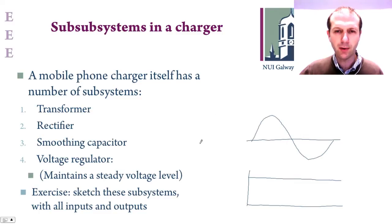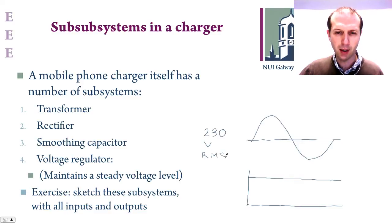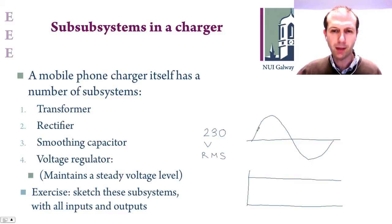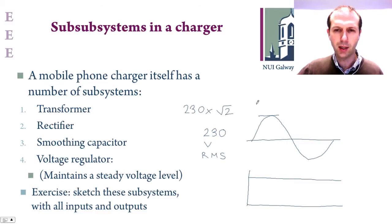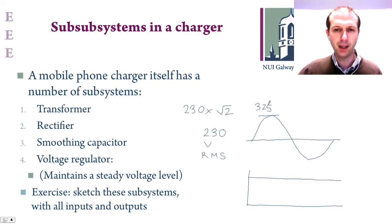The first thing is that our mains voltage is usually quite high compared to what we need in our electronic equipment. The RMS voltage used in this country is 230 volts — root mean squared. The RMS value is a measure of the voltage level, and if you want to find the peak value of this voltage, you take 230 volts and multiply it by root 2, which works out to be somewhere around 325 volts.